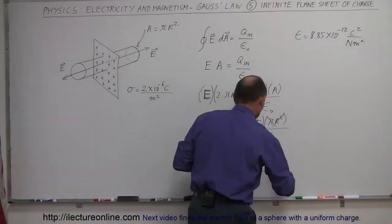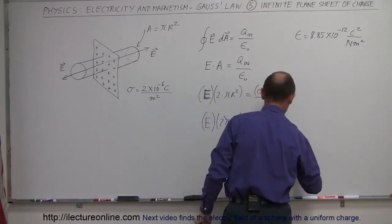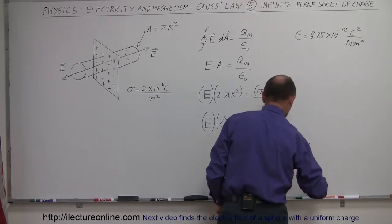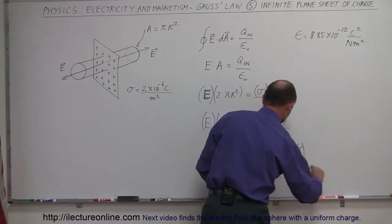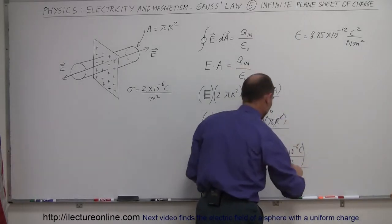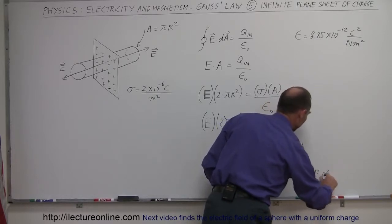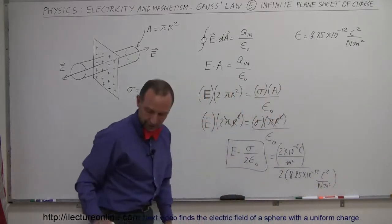All right, so that will work for this. And this will be equal to sigma. Sigma, of course, we got 2 times 10 to the minus 6 coulombs per square meter. We're going to divide it by 2 times epsilon sub nought, which is 8.85 times 10 to the minus 12 coulombs squared per newton meter squared.